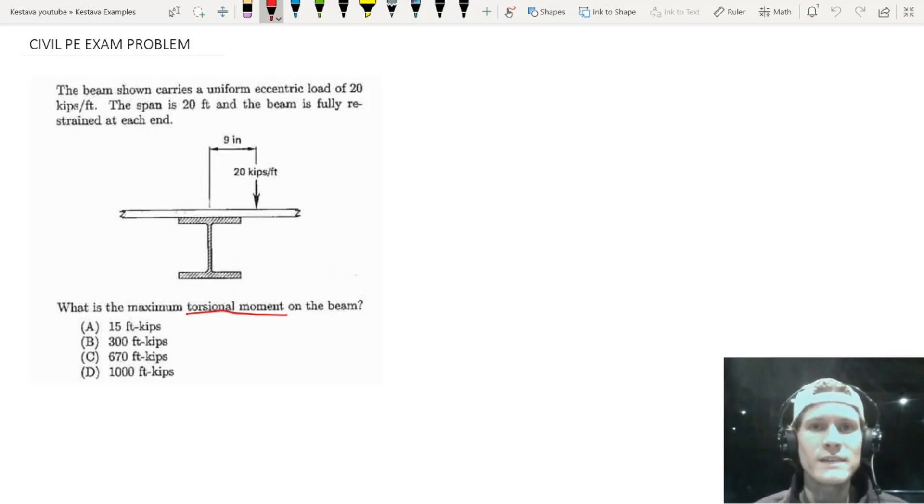So where torsion can get funky is in the design of an element, whether that's wood or steel or concrete. Each building material is very unique for torsion, and the properties of each totally act differently, and the equations are all different. So when torsion can get more complicated, it's when you're actually asked to design an element for torsional forces.